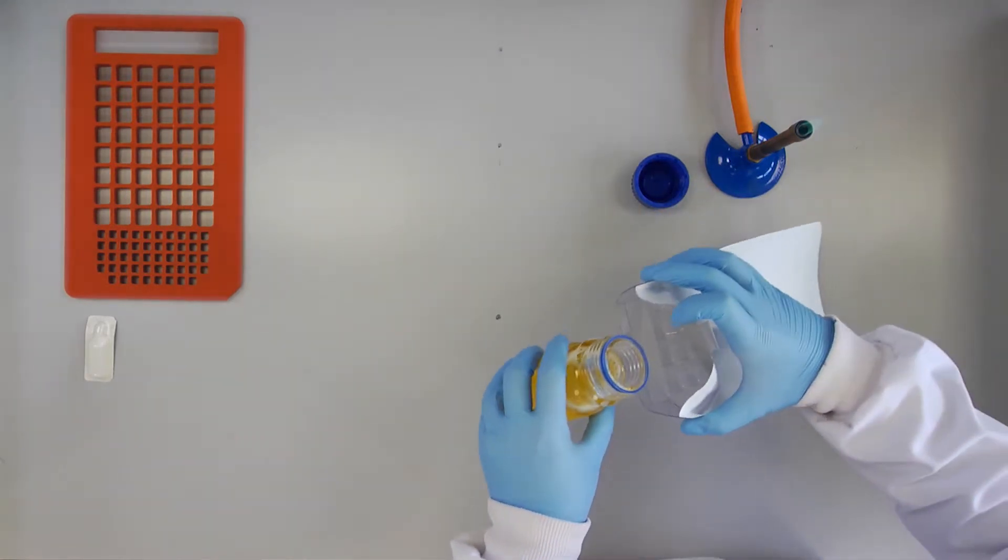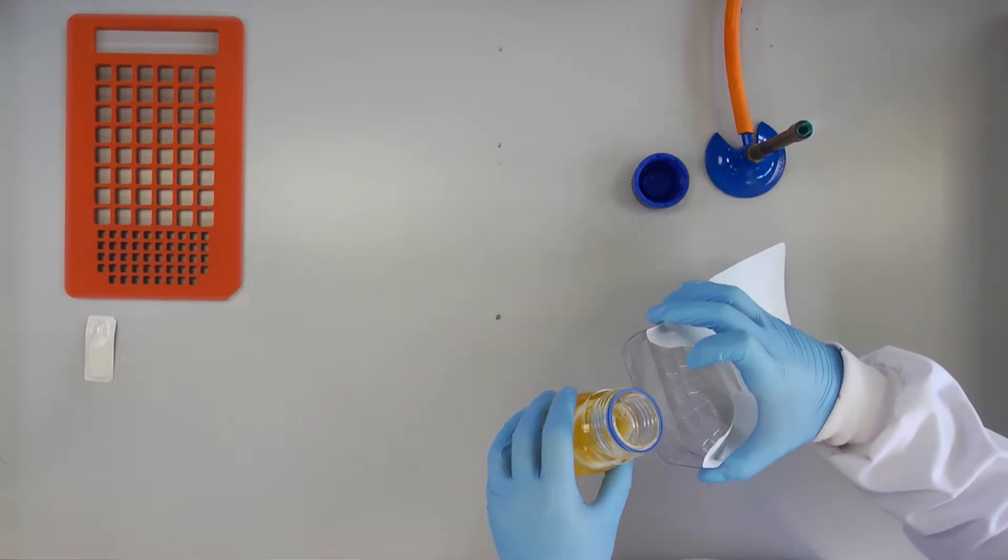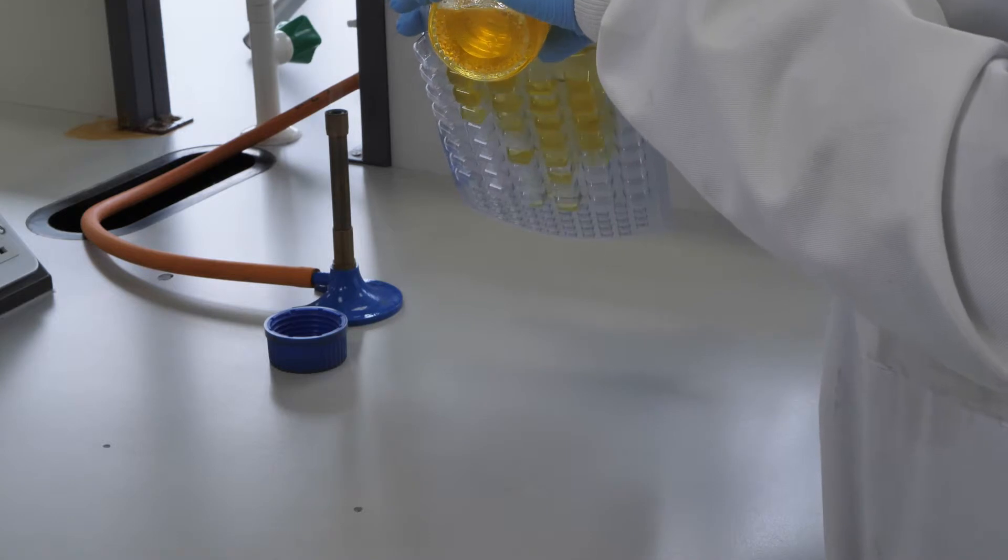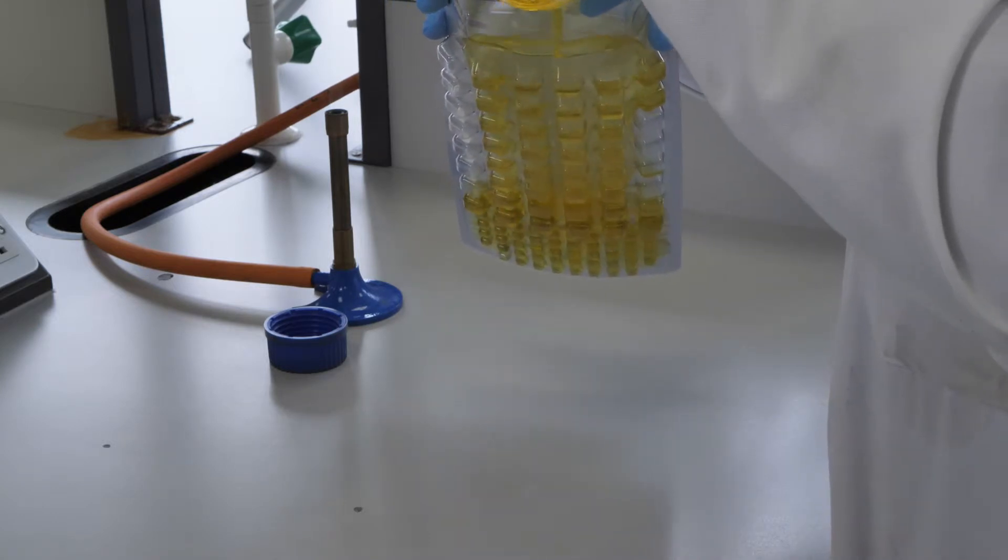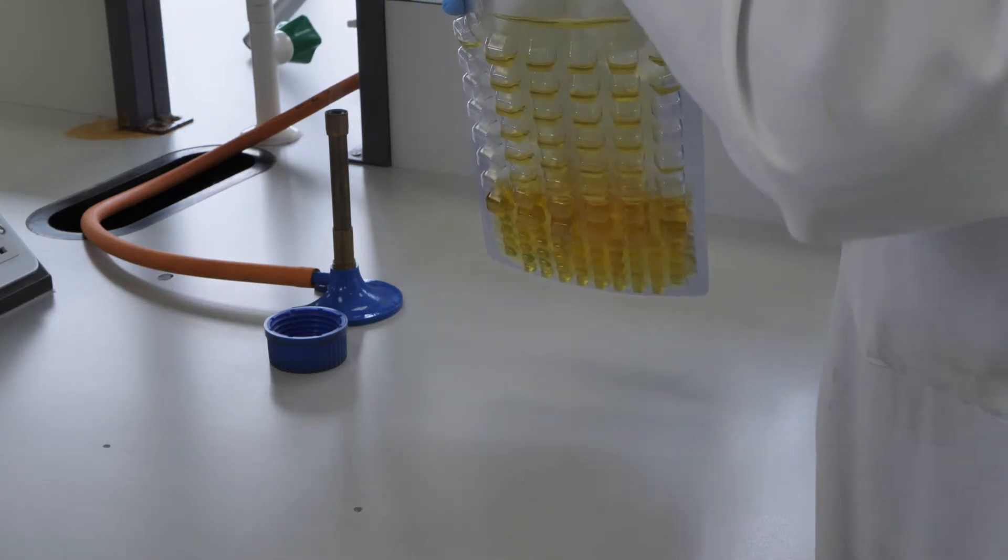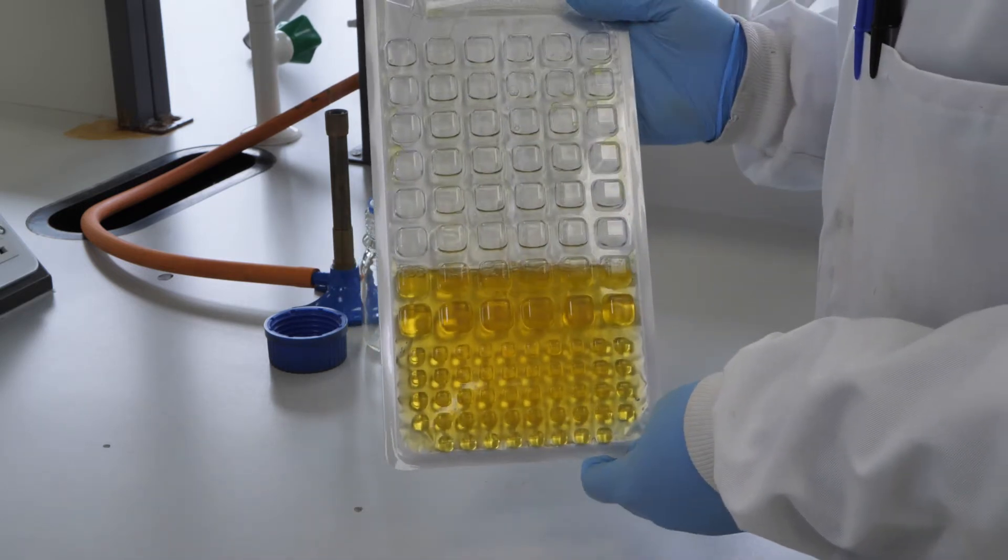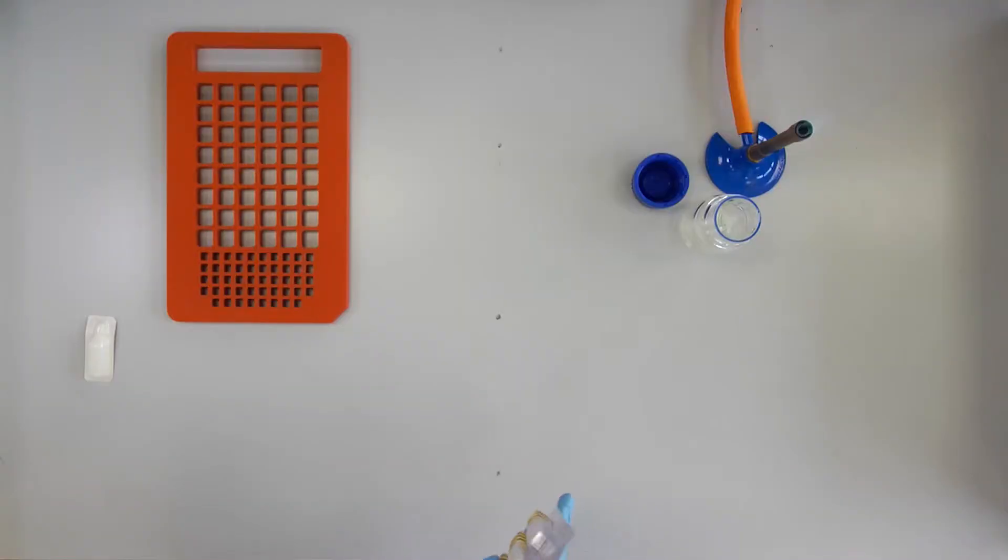Squeeze the upper part of the Quanti-Tray so that the tray bends. Pour the reagent sample mixture directly into the Quanti-Tray. Avoid touching the inside of the foil or tray.